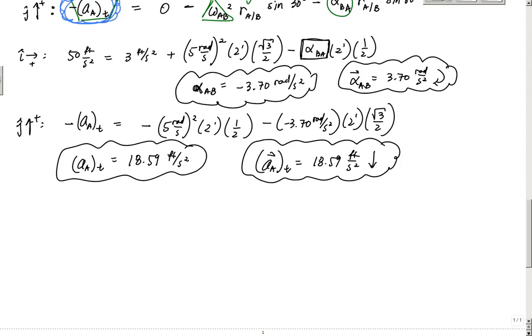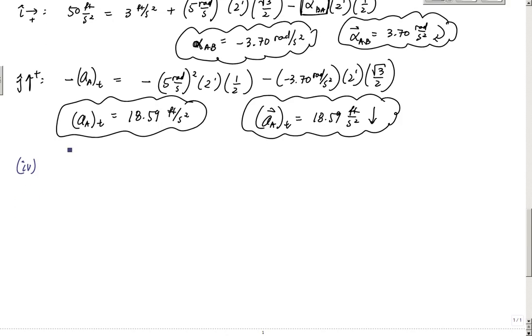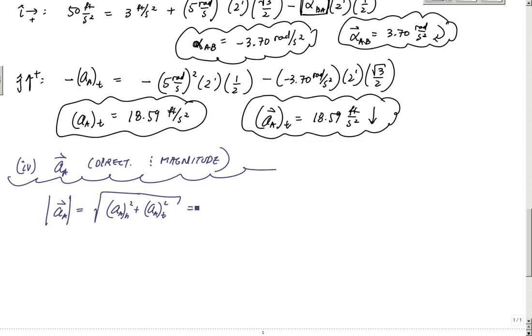All right. And now the last part of this problem was really figuring out the direction of the total acceleration of A. So we wanted to find AA and get both direction and magnitude. Right here. So here, it's easy. AA, the magnitude of AA, is the square root of AAN squared plus AAT squared, and that is 50 squared plus 18.59 squared, square root comes out to 53.34 feet per second squared.